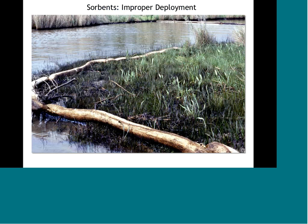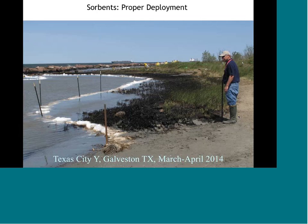An example from the Neches River in Texas shows improper sorbent deployment — vessel wake displaced the sorbent material onto the marsh surface, crushing vegetation and reducing effectiveness. In contrast, at the Texas City Y-spill, sorbents were properly deployed by staking them along an oiled marsh in the Houston Ship Channel, effectively capturing oil washed off during tidal flushing and vessel passage.